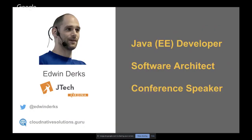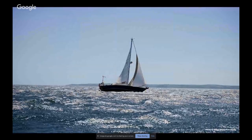My name is Edvin Derks. I am employed as a software architect at Ordina JTech in the Netherlands. I'm a Java developer for more than 12 years and I have done several Java enterprise projects. Aside from my daily job, I'm also writing blogs and articles and being a conference speaker.